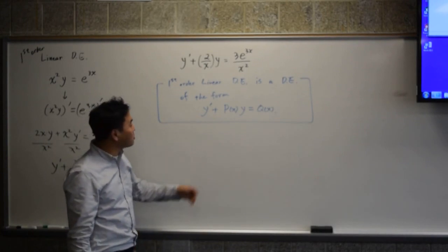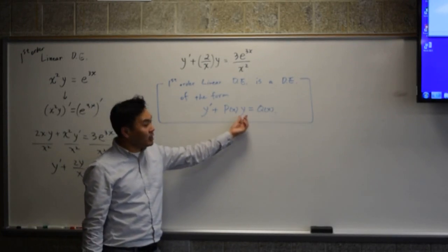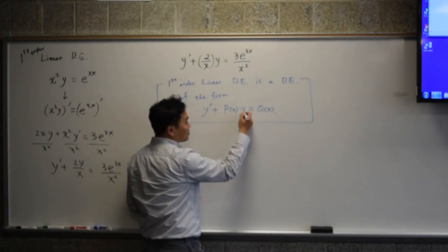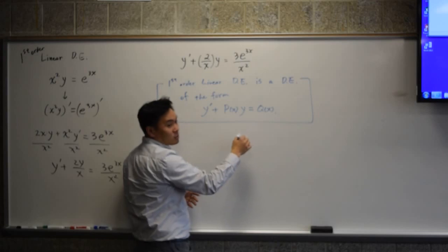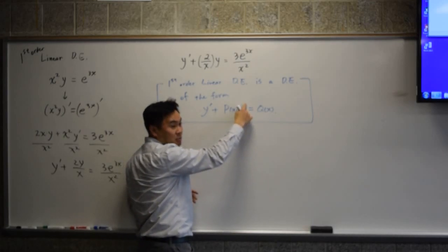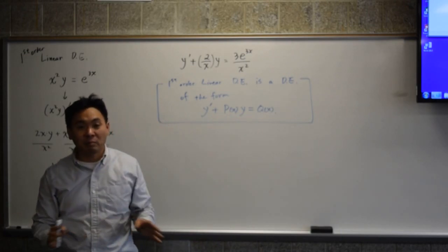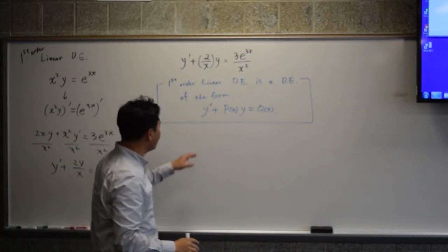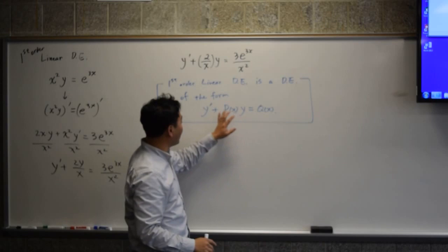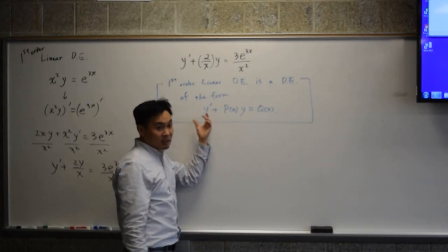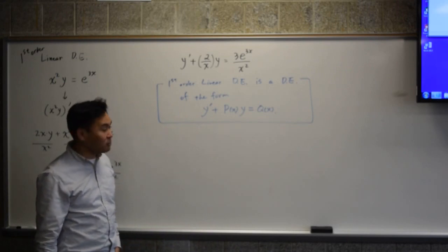And it's called linear because whenever you see y, it has no powers. It's the power of 1, right? So if we had y squared, for example, or sine of y, e to the y, anything else will not be called linear. Only when all the y prime and y has first power, then you're going to say first-order linear.